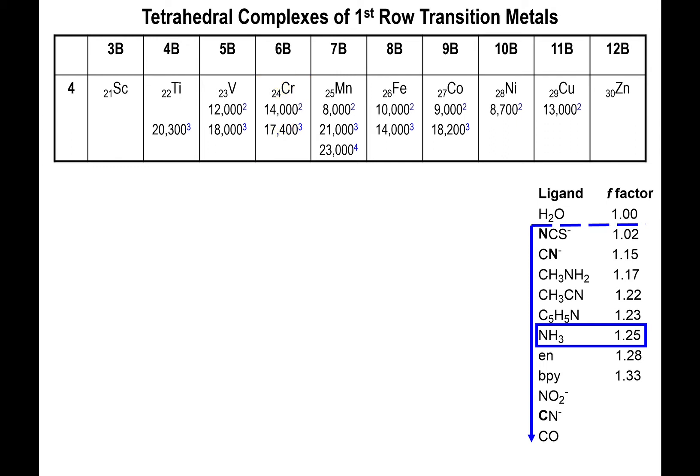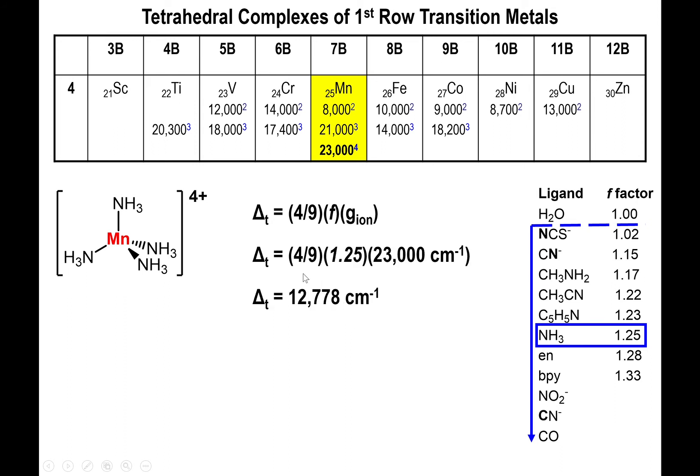Let's look at manganese 4 plus. For manganese 4 plus with four ligands in the tetrahedral arrangement, you do the same thing: multiply four ninths times F times G ion. Manganese 4 plus has 23,000 inverse centimeters as the G ion energy. The F factor is 1.25 for ammonium. Multiplying all these together, we get very close to that 13,000 cutoff.